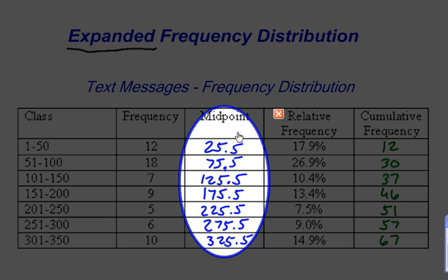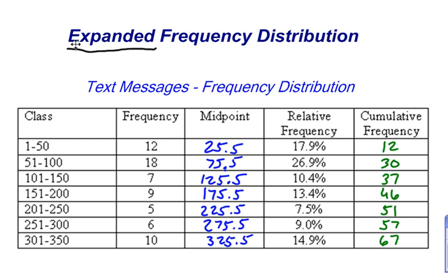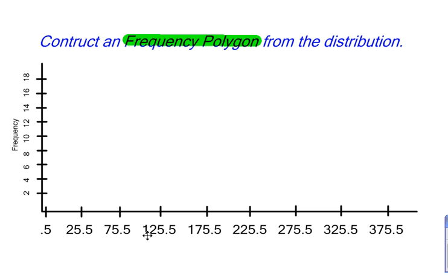And what I've done is I've taken each one of these midpoints, 25.5, 75.5, 125.5, all the way down to 325.5, and I've put them into a display here. Down at the bottom, I've got my midpoints for each of my classes. So I could label this down at the bottom as class midpoints.